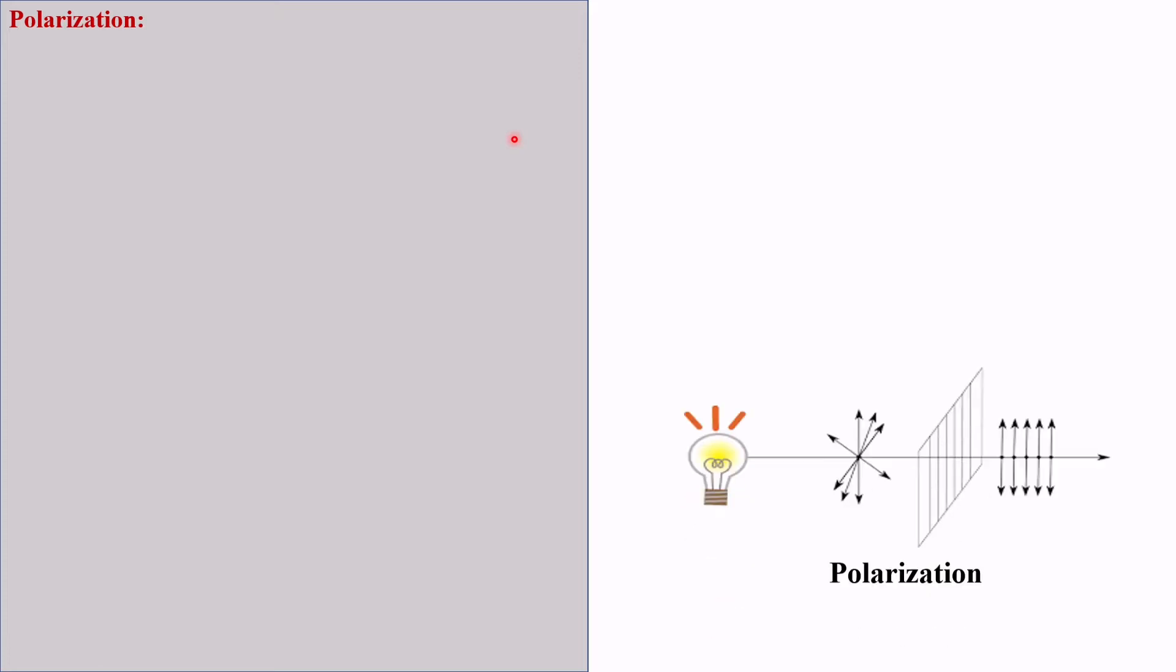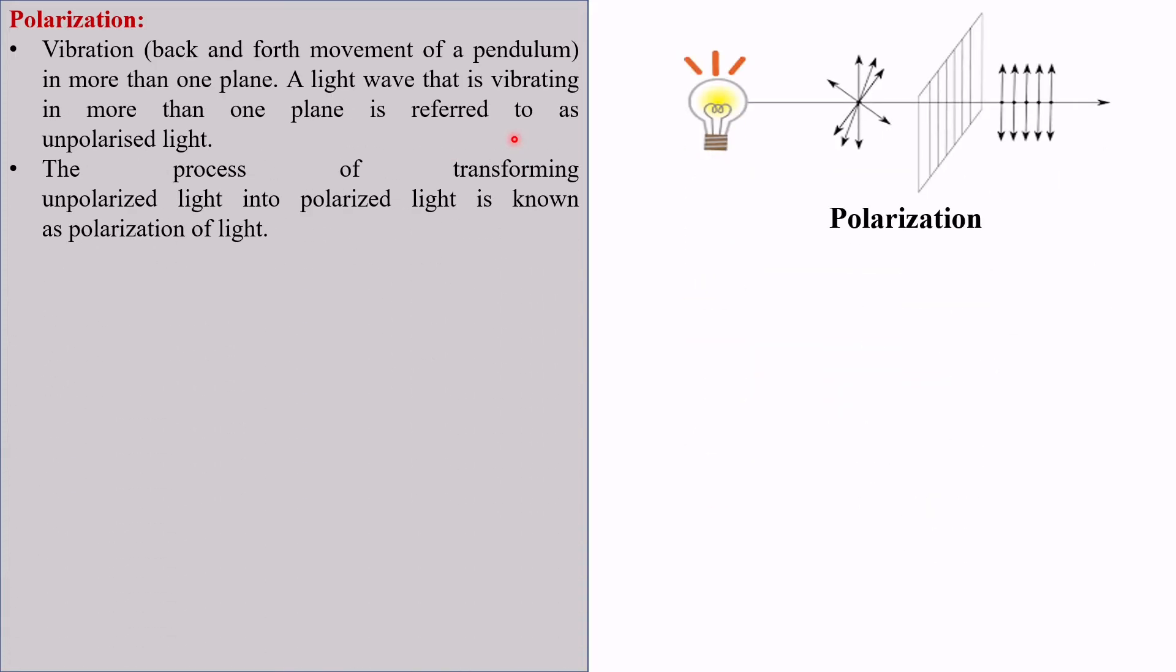Polarization is vibration of light in more than one plane. We know there are three planes: XY, XZ and YZ. A light wave that is vibrating in more than one plane is referred to as unpolarized light. The process of transforming unpolarized light into polarized light is known as polarization of light.